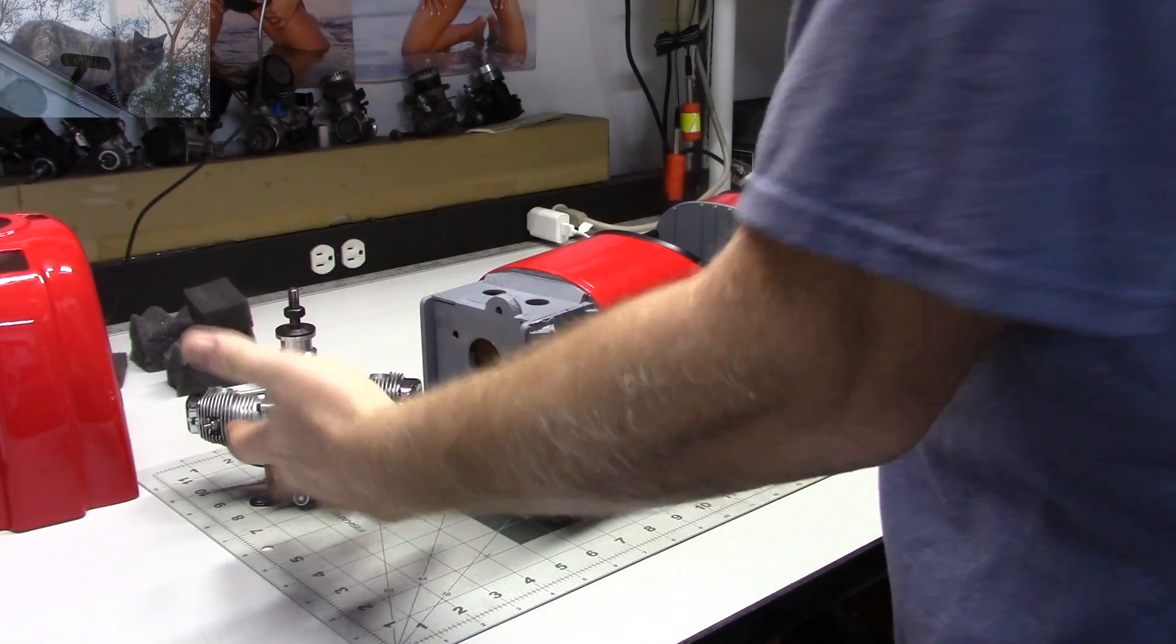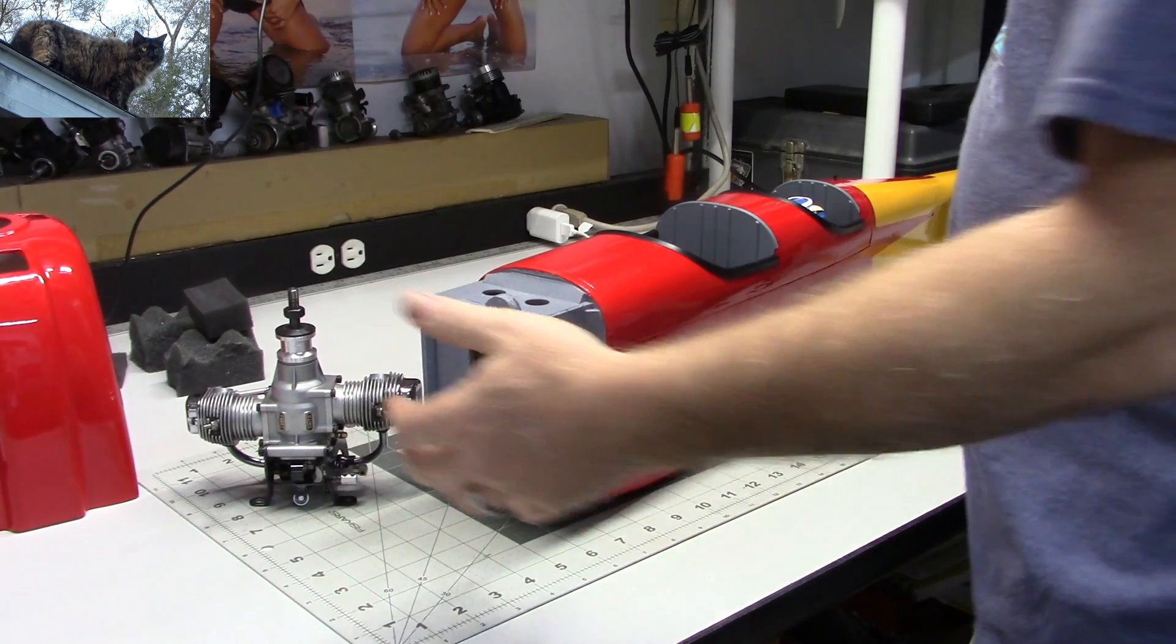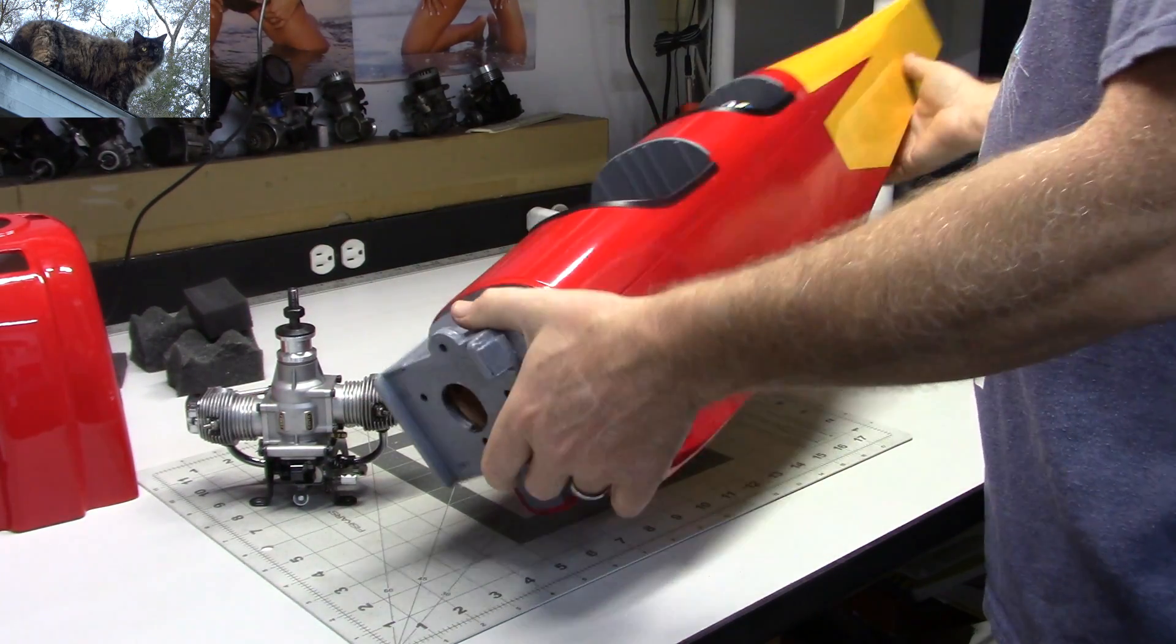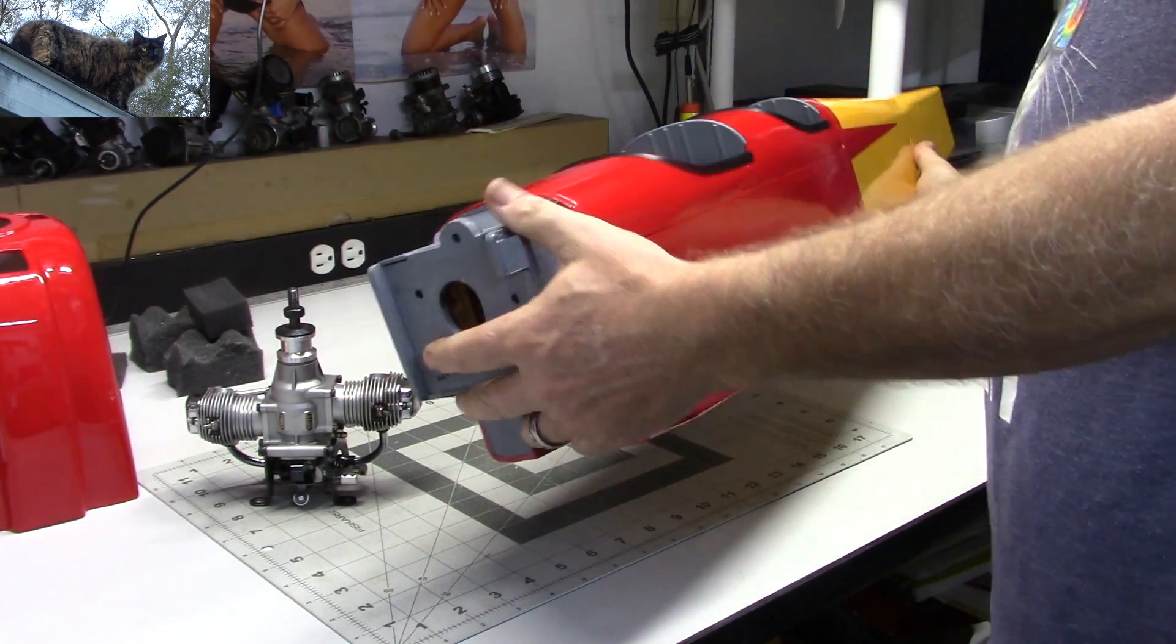Okay, so I've got my Sato FA-60T engine out here, and I've got the Spacewalker fuselage here.